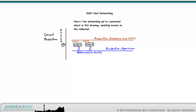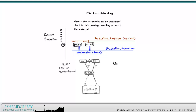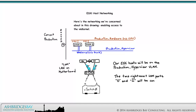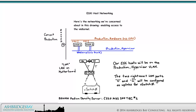Here's the networking we're concerned about in this drawing, enabling access to the VM kernel. Our ESXi Host will be on the Production Hypervisor VLAN. The two rightmost LOM ports will be configured as uplinks for vSwitch0. The networking diagram shown here is for the BE6000 medium density server, but it will work for any C Series having only the LAN on motherboard card.